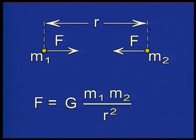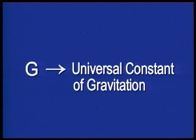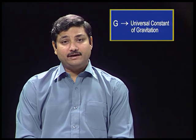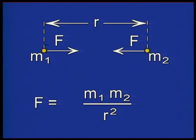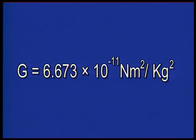In the expression for the force, G, the constant of proportionality, is called the universal constant of gravitation. Do you understand the meaning of universal? It means that G has the same value everywhere in the universe. So the force of gravitation between two bodies will be the same everywhere. You may recall that the value of G is 6.673 times 10 to the power minus 11 Newton meter square per kg square.